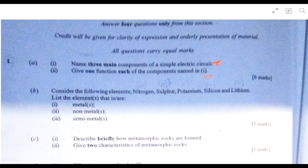The first question is name three main components of a simple electric circuit. We have the wire, the cell, the resistor, the rheostat, and you can name them. Let's give one function of the components mentioned. The cell is the source of energy to the whole circuit. A resistor restricts the flow of current. An ammeter is used to measure the current flowing in the circuit.